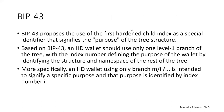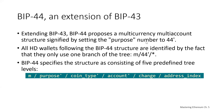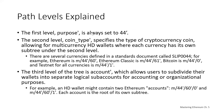BIP43 proposes the use of the first hardened child index as a special identifier signifying the purpose of the tree structure. BIP44 gives support for multi-currencies and multiple accounts, describing how to handle Ethereum, Ethereum Classic, Bitcoin, Testnet, and so on. As a user, you're never going to see this — you have a graphic user interface on your wallet. This is only relevant if you're doing programming at the wallet level.